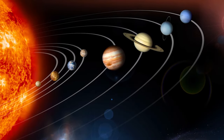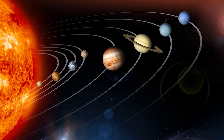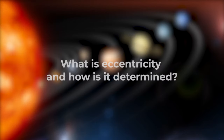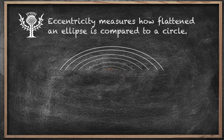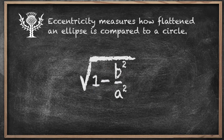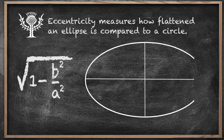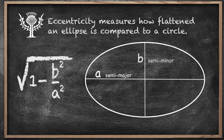Kepler tells us that orbits are ellipses, which are like circles with some added eccentricity. But what is eccentricity? How do you figure it out? Eccentricity measures how flattened an ellipse is compared to a circle. We calculate it using this equation. A is the semi-major axis, or half the distance along the long axis of the ellipse, and B is the semi-minor axis, or half the distance along the short axis of the ellipse.